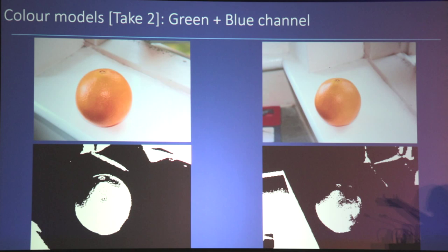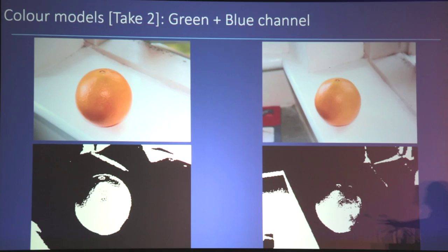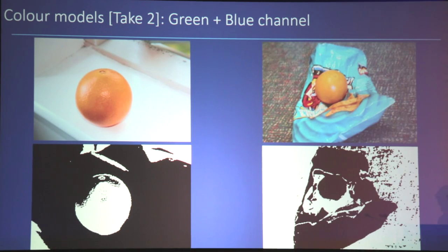Applying this 2D rule to both the training example and new unseen examples, it performs okay, but there are several parts of the orange it misses and several background regions it incorrectly classifies as orange. Clearly we're not doing as well as we could. The two harder examples — the Dorito cover and a real orange among plants — still show significant errors.